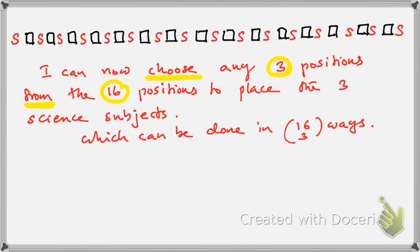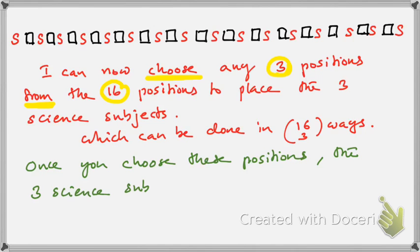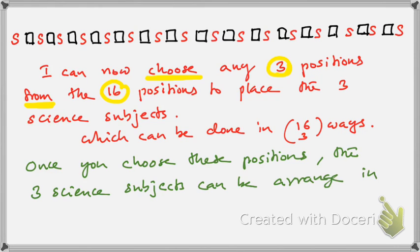From the available 16 positions, I can choose 3 positions to place my 3 science subjects in 16C3 ways. Once I choose a set of positions, the 3 science subjects among themselves can be arranged in 3 factorial ways. Which means there are 16C3 different ways of choosing the 3 positions, and every time I choose that, there are 3 factorial ways of arranging the 3 science subjects. So the 3 science subjects can be arranged in 16C3 × 3! ways.